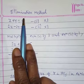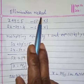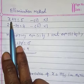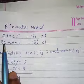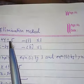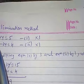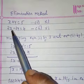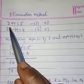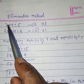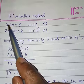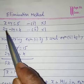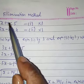Exercise 3.4: Elimination method. x plus y is equal to 5, 2x minus 3y is equal to 4. In the elimination method, you have to make the coefficient of x equal or y equal. To make x equal, multiply equation 1 by 2 and equation 2 by 1.